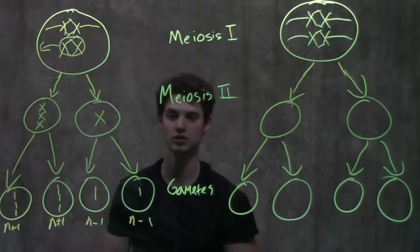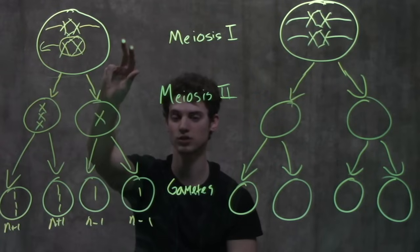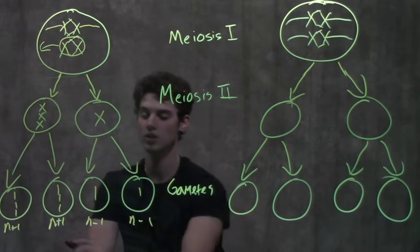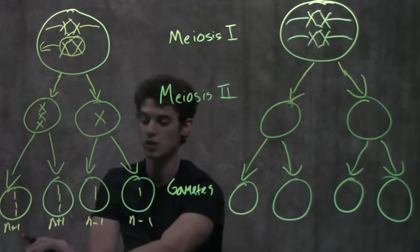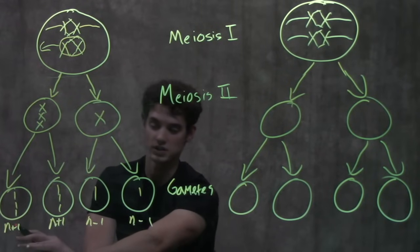So that's a big thing with nondisjunction during meiosis I—all the gametes are affected. For a normal human gamete, it would be 23 chromosomes, but because of this, it's n+1: 24, 24, 22, and 22.